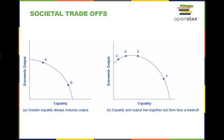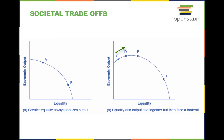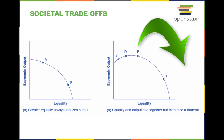Society faces a trade-off where attempts to move toward greater equality, like moving from choice A to B, involve a reduction in economic output. However, situations like point C exist where it is possible to both increase equality and economic output. Movement from choice D to E may increase equality with little impact on output. But too aggressive a push for equality, as in the shift from E to F, will tend to reduce economic output. It is therefore critical for the government to use effective taxation and policy to address economic inequality.